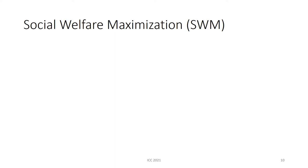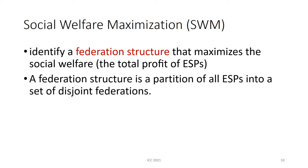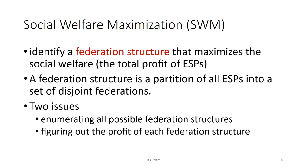The final problem, social welfare maximization, is to identify a Federation structure that maximizes the social welfare — that is, the total profit of all ESPs. A Federation structure is a partition of all ESPs into a set of disjoint Federations. To identify an optimal Federation structure, we have two issues: the first is to enumerate all possible Federation structures, and the second is to figure out the profit of each Federation structure.